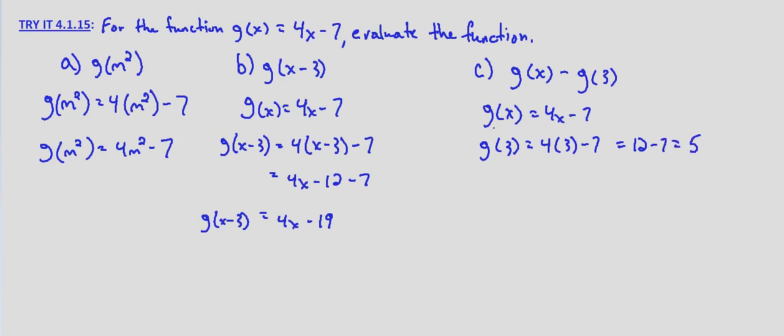So then we would substitute what we found for g of 3 in our expression. g of x minus g of 3 equals, well g of x is just 4x minus 7, and that's minus, and we found that g of 3 is 5. So that equals 4x minus 7 minus 5, which equals 4x minus 12. So g of x minus g of 3 equals 4x minus 12.